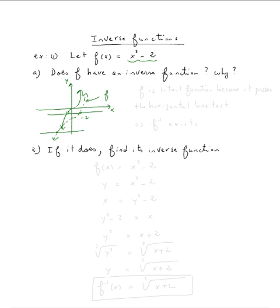So how would we say this? We're going to say f is a one to one function because it passes the horizontal line test. Therefore, the inverse function exists.